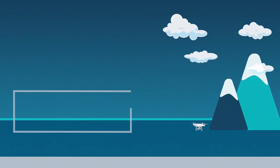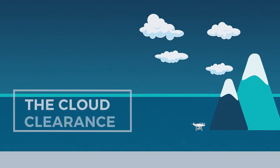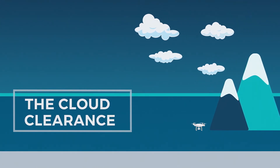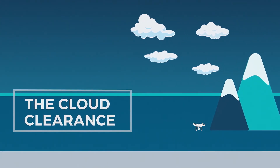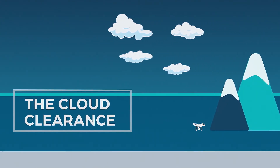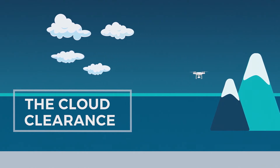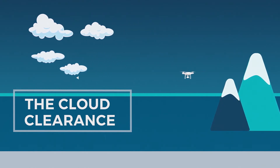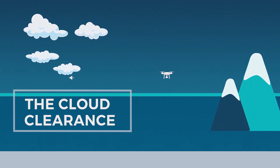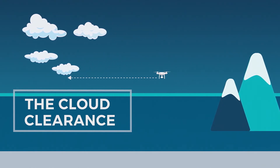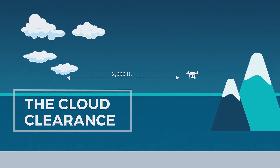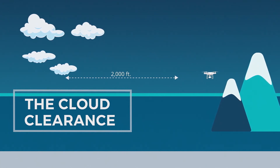But what about the 2,000 feet horizontally? If you're flying at the same altitude as clouds — like if you were in a mountainous environment — you need to distance yourself horizontally from those clouds at least 2,000 feet. The 2,000-foot part of this rule only applies horizontally, meaning if you're operating at the same altitude as the clouds.